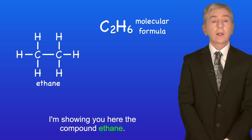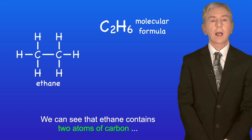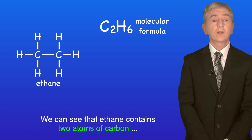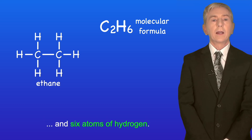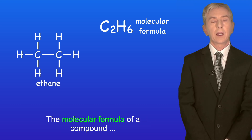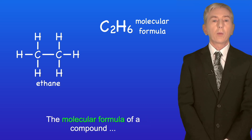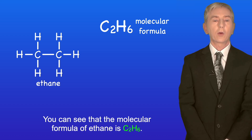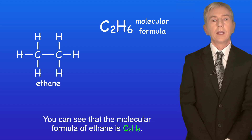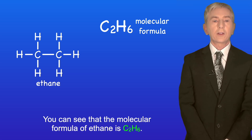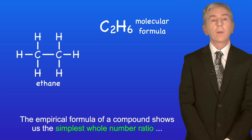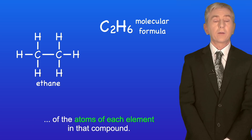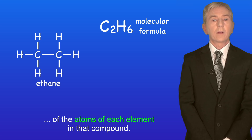I'm showing you here the compound ethane, and we can see that ethane contains two atoms of carbon and six atoms of hydrogen. The molecular formula of a compound shows us the number of atoms of each element, so the molecular formula of ethane is C2H6. The empirical formula of a compound shows us the simplest whole number ratio of the atoms of each element in that compound.